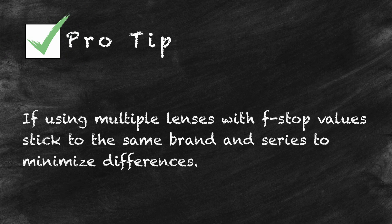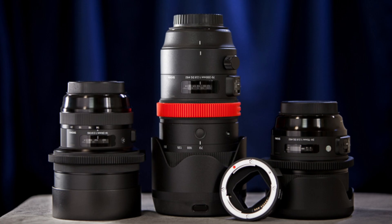So if t-stops are so accurate, why don't we use them in still photography? It simply comes down to cost. Measuring transmission accurately takes time and specialized equipment, which increases manufacturing cost. Photographers can easily adjust exposure on the fly, typically aren't doing simultaneous multi-camera coverage, and the small differences between lenses are often imperceptible or easily corrected in post. On your photo and video shoots, one of the best ways to minimize differences between f-stop lenses is to stick with the same manufacturer and line or series of lenses, so they will have fewer optical differences between them.